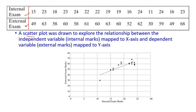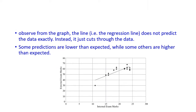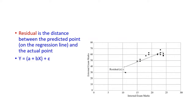To understand the relationship, we plot a scatter plot where the x-axis is the internal exam mark and the y-axis is the external exam mark. In this graph, the regression line does not predict the data exactly — not all data points lie on the regression line itself. Some points are lower than the regression line and some are higher.